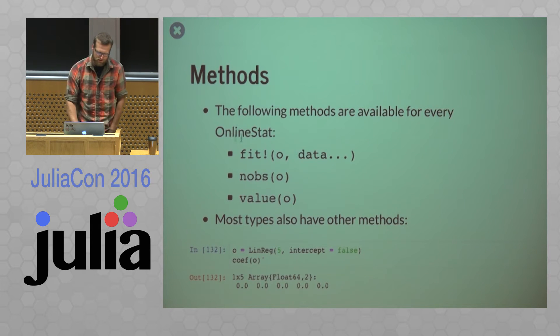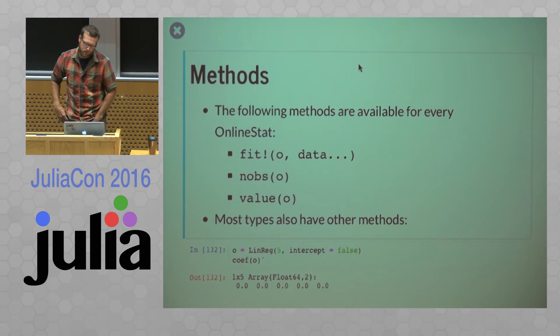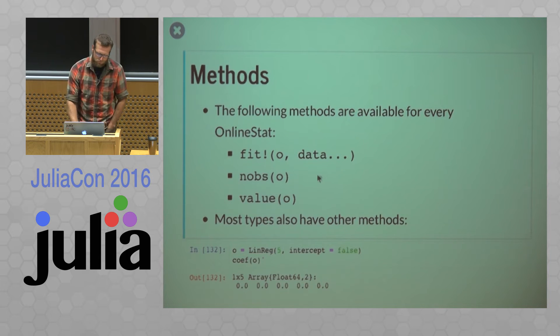So there's a fit with exclamation mark. So you give it an online stat object O and whatever the data looks like, and that will update that object in place. Nobs for getting the number of observations and value will return whatever the value is associated with that online stat.